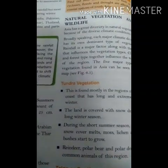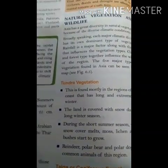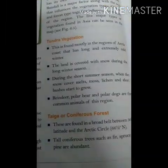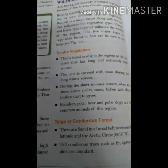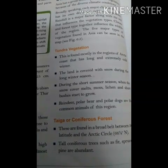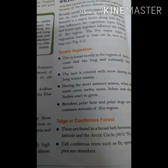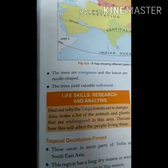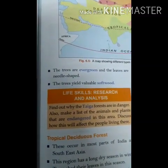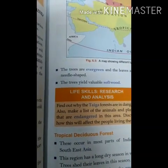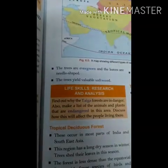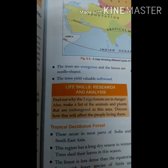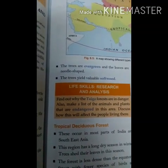The animals of the tundra region mainly consist of reindeer and musk ox. Taiga or coniferous forests are largely found in southern Alaska, Canada, Norway, Sweden, Finland, and northern Russia and Siberia. Winters are very cold and summers are warm and short. Due to low rainfall and severity of winters, plant growth is very slow.